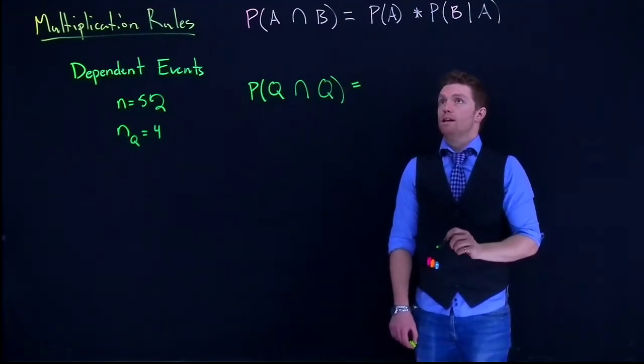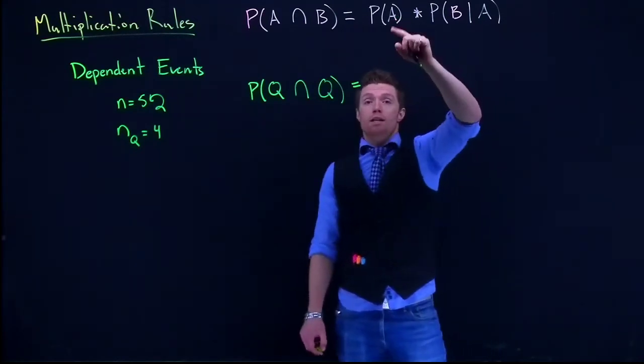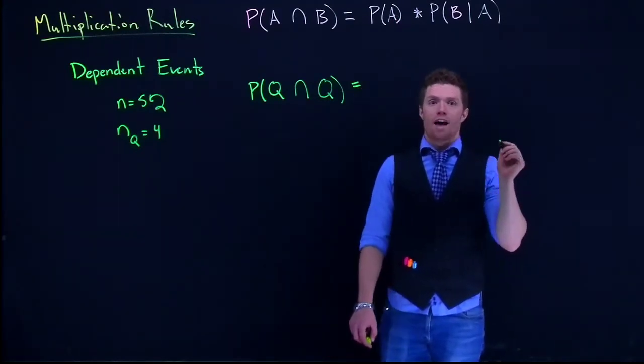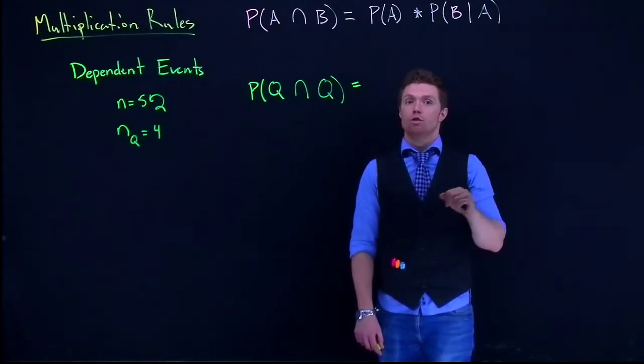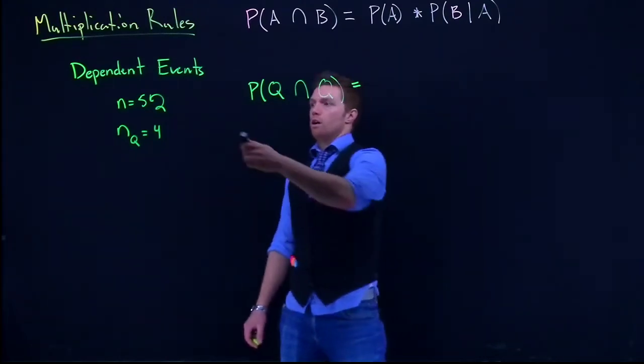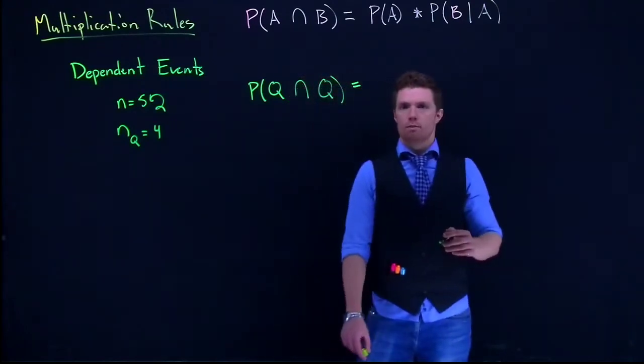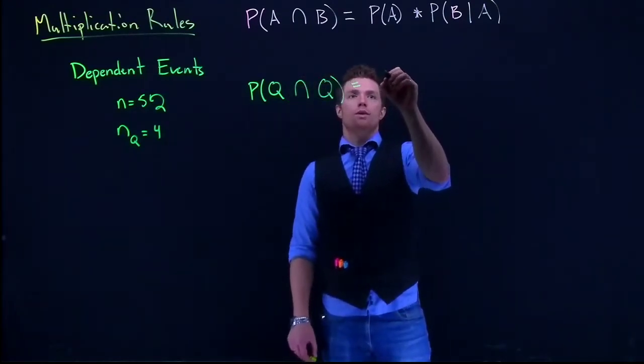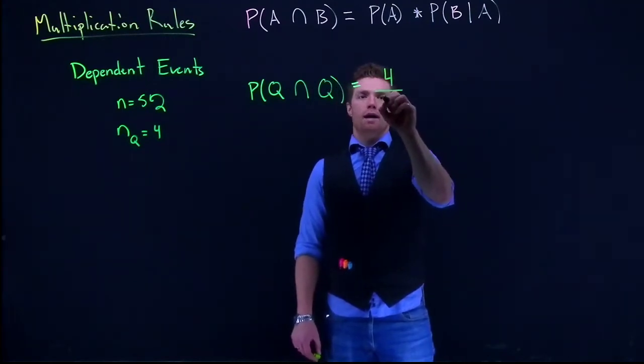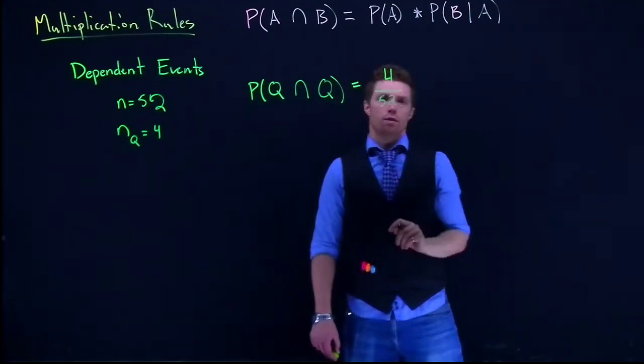So when we do this as dependent events, we know that the probability of A is the number of outcomes in our event divided by the total number of outcomes. There are a total of 52 cards that we can draw from a deck and four of them are queens. So we've got this 4 divided by 52.